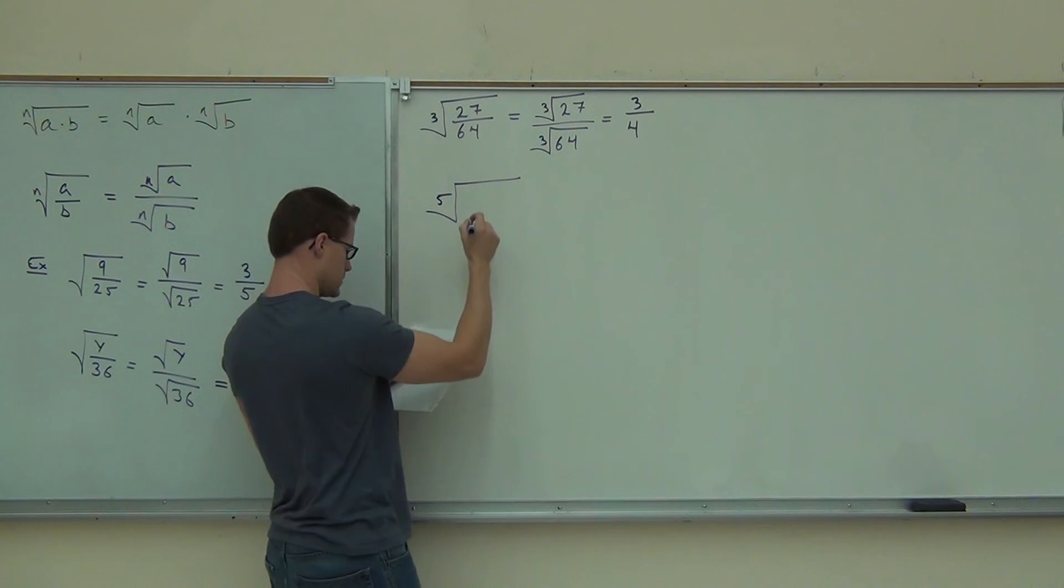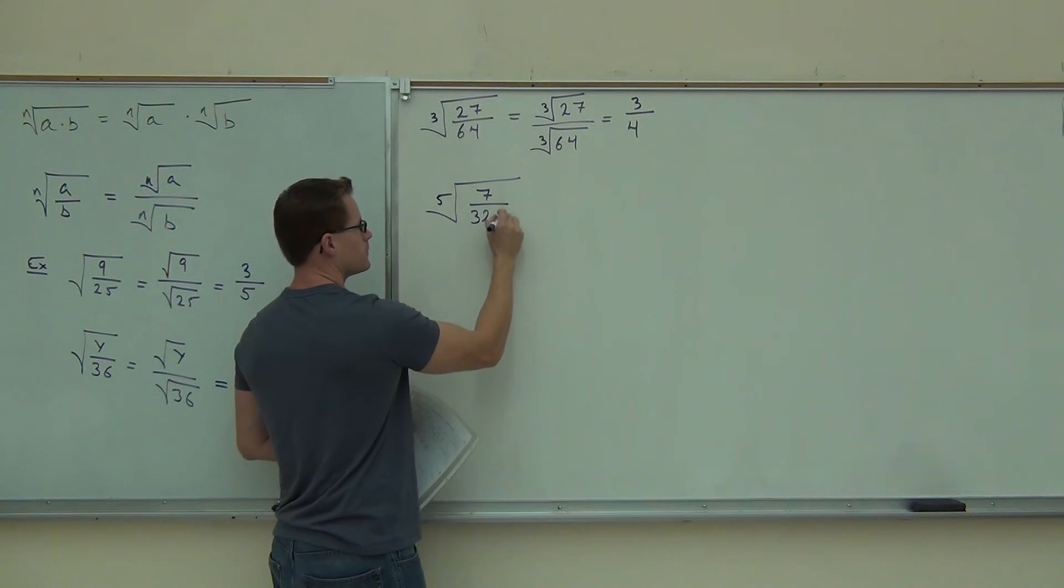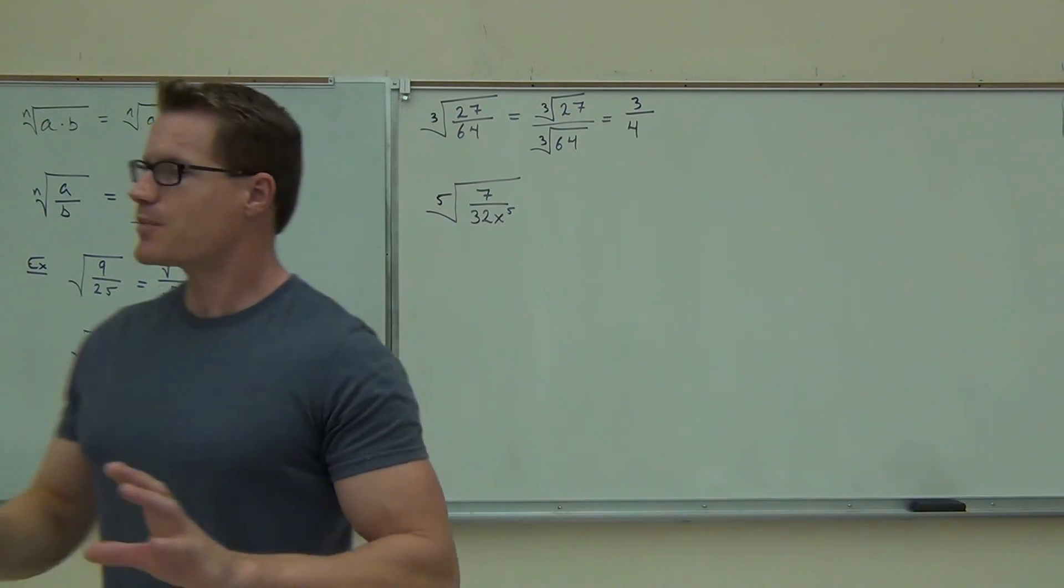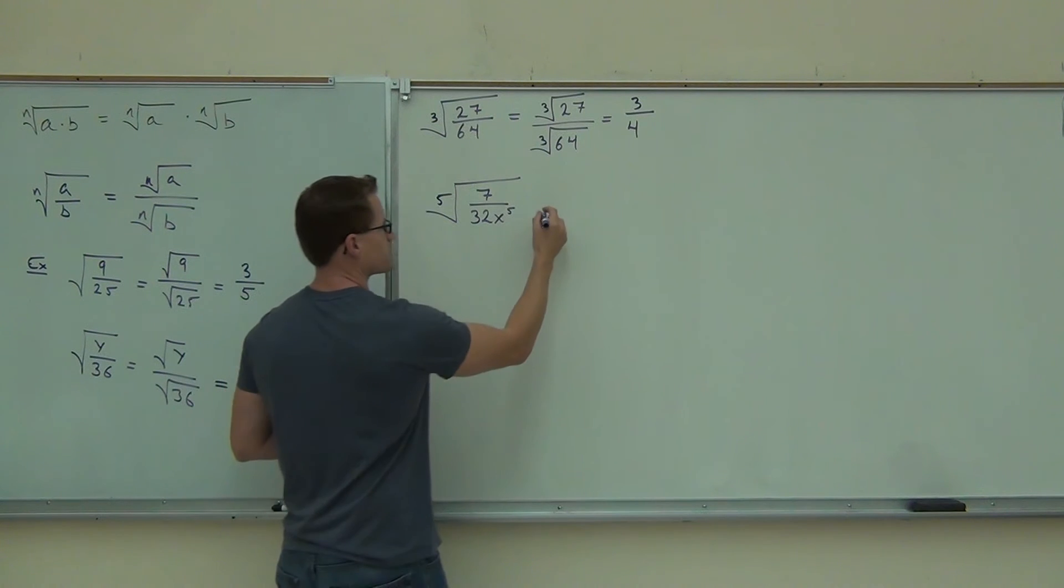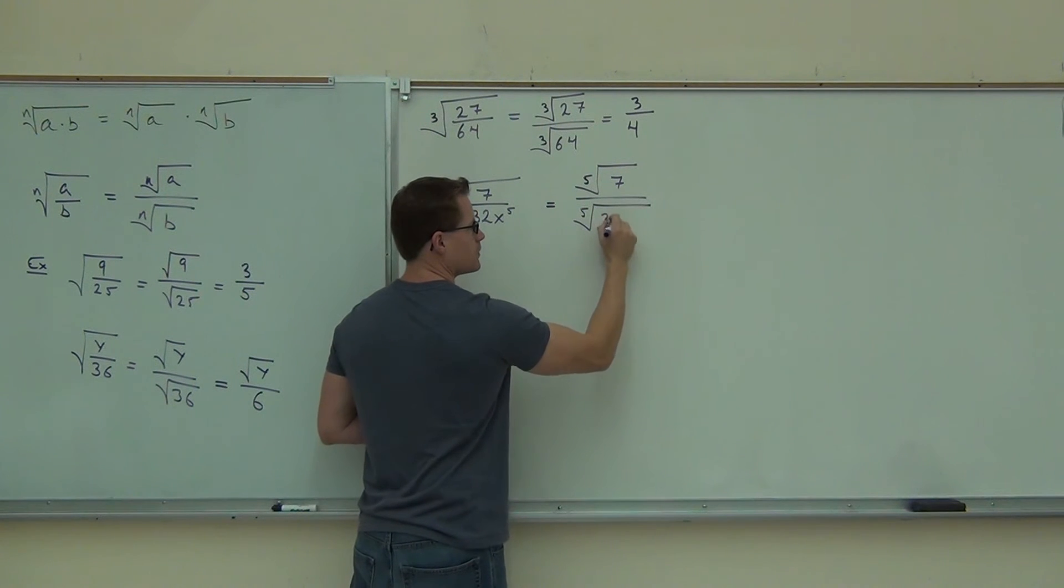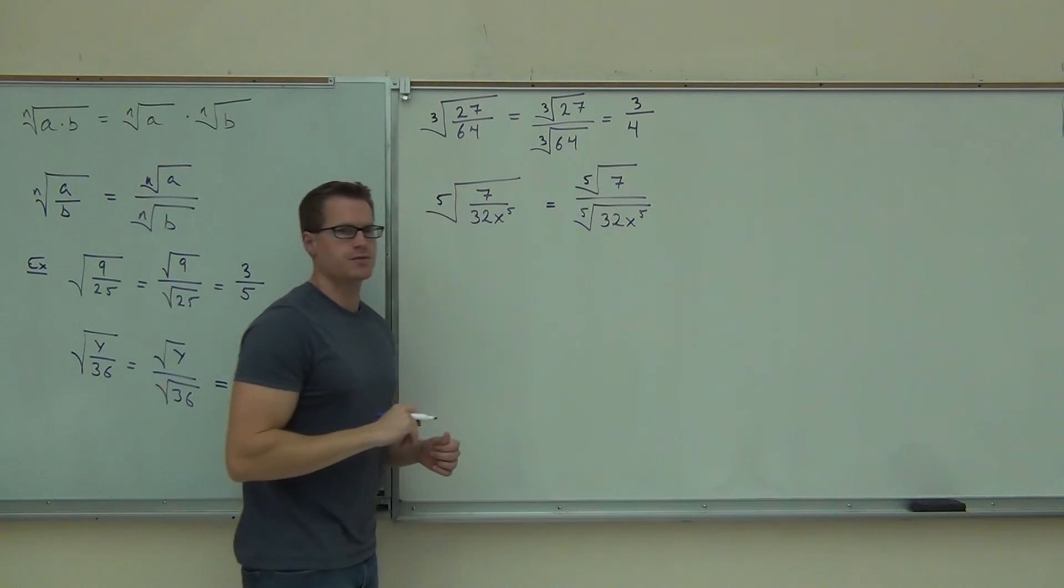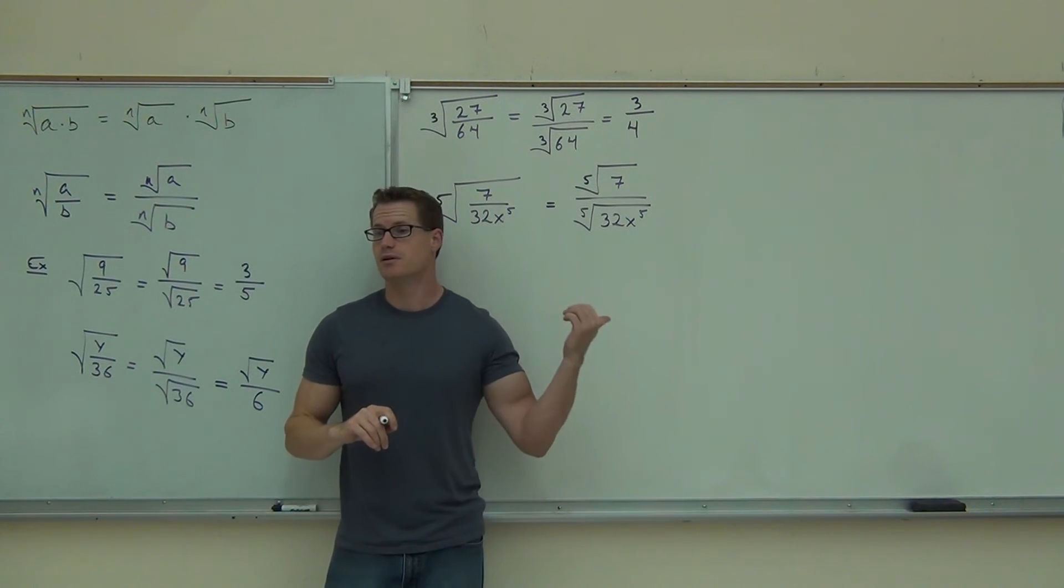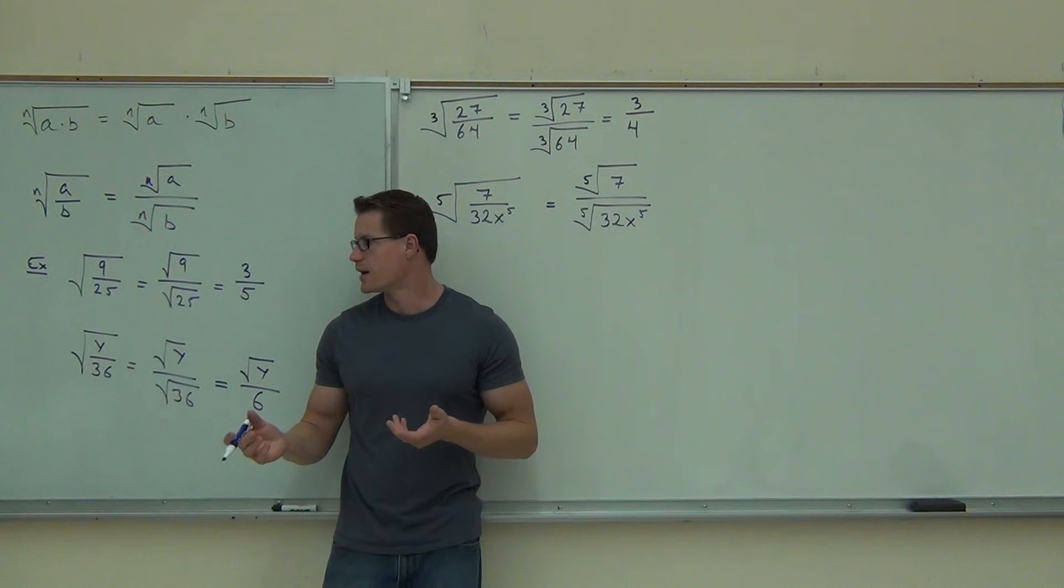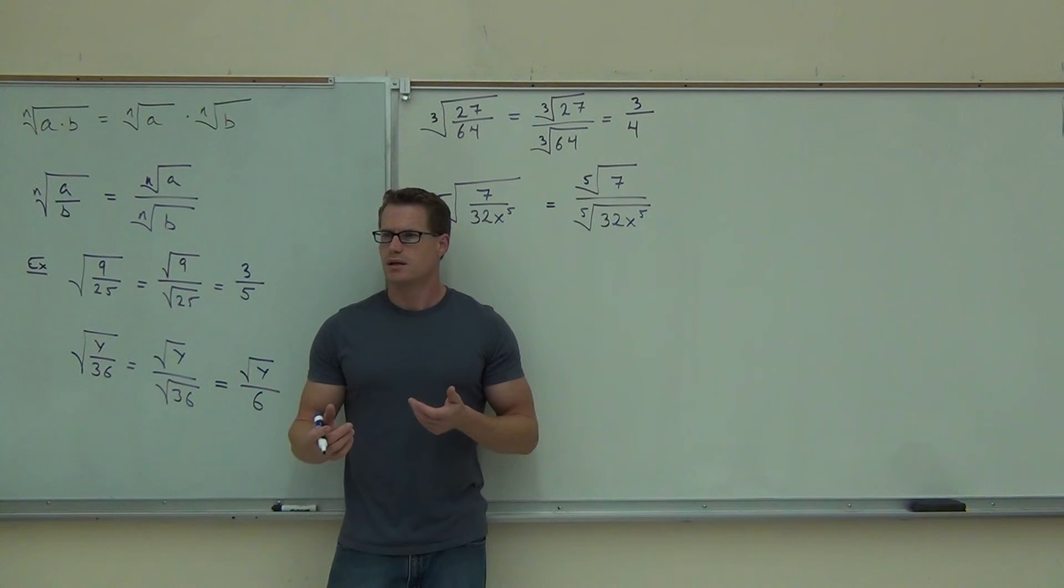Let's practice with a fifth root of 7 over 32x to the fifth. First thing we know is that any type of root we can separate a quotient. That's the quotient rule for us. So we're going to have a fifth root of 7. We're also going to have a fifth root of 32x to the fifth. Ladies and gentlemen, can you simplify the fifth root of 7? No. No. I can't think of any number multiplied by itself that gives you 7 five times. It doesn't really work. Now, the fifth root of 32x to the fifth, that's something we should be able to simplify. Let's think of the 32. Everyone just do this in your head real quick. The fifth root of 32. What number times itself five times gives you a 32? Do you know it? Two. Two works. Very good.